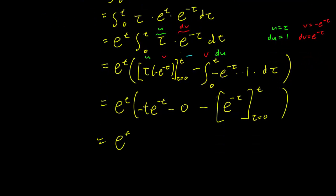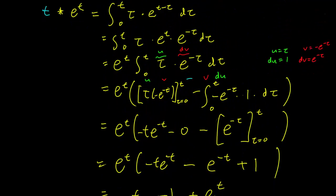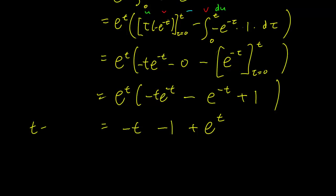And what we have is e^t times minus t times e^(minus t), minus e^(minus t), plus 1. Multiplying the e^t out, we get minus t minus 1 plus e^t. And there you have it — the convolution of t and e^t is minus t minus 1 plus e^t.